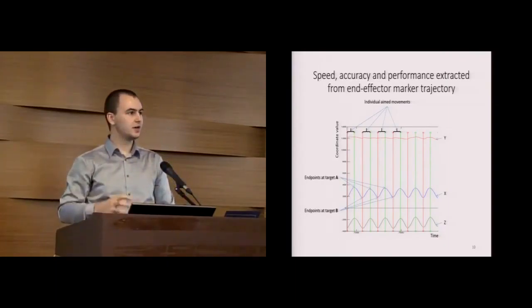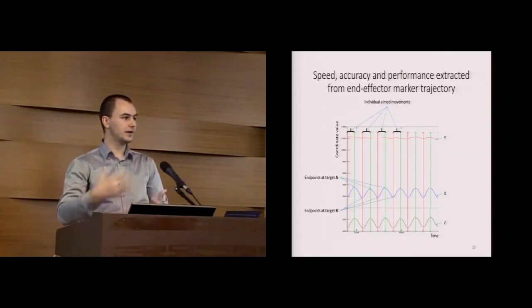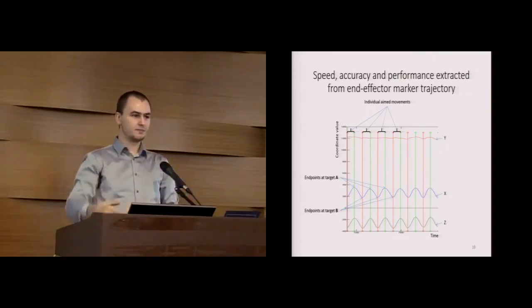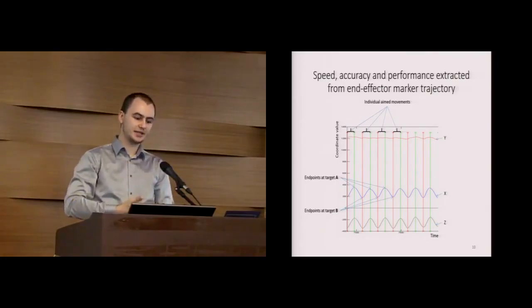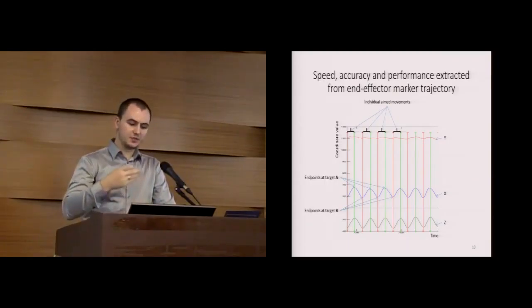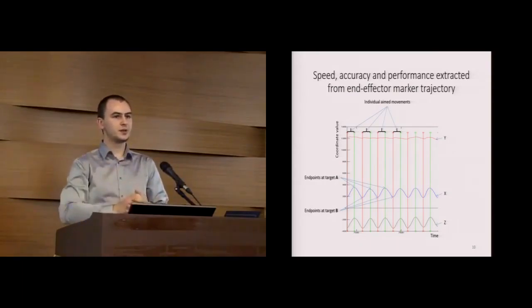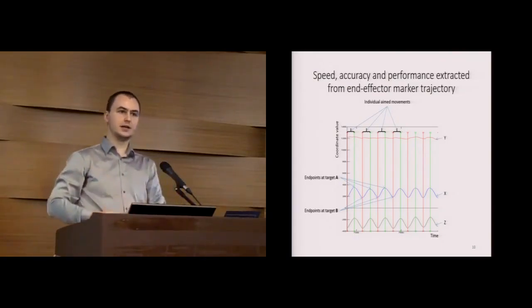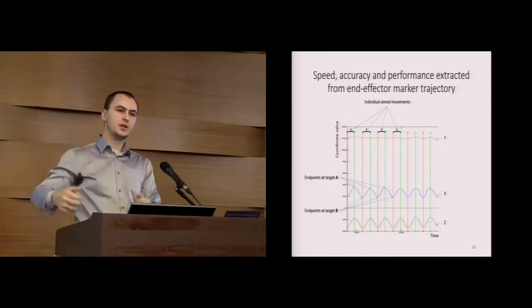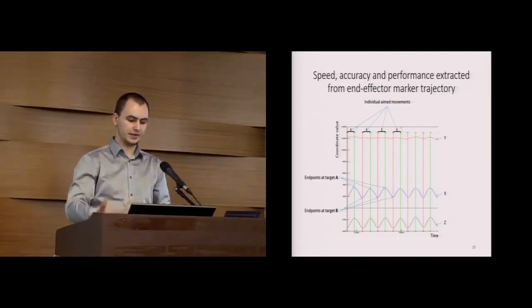Here I tell about performance analysis. We take the marker which corresponds to the end effector of our participants, and here you can see trajectory of that marker projected on this plot. From this trajectory we can identify both effective targets between which movements are performed and length of each individual movement. Then when we have a set of aimed movements from A to B, we can easily apply traditional Fitts' law and model performance and throughput.